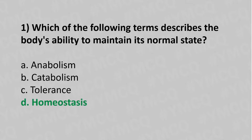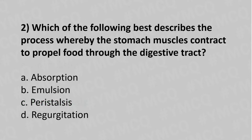Now let's move to question number two: Which of the following best describes the process whereby the stomach muscles contract to propel food through the digestive tract? Option A: absorption. Option B: emulsion. Option C: peristalsis. Option D: regurgitation. The answer is Option C: peristalsis.